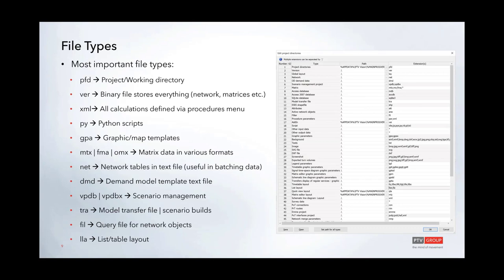Python (.py) files are scripts for matrix or complex utility calculations in vZoom. These correspond to Cube scripts — macros you'd typically have in Cube will now be seen as Python scripts in vZoom. The GPA file is a graphic template file that stores map templates so you don't have to define graphical settings from scratch, similar to MXT files in other tools.